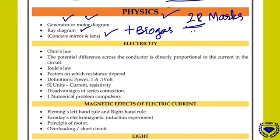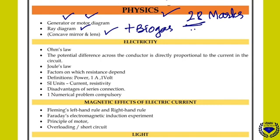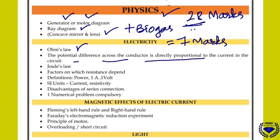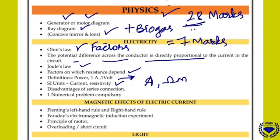Coming to electricity — around seven marks you can expect from electricity. Key concepts include: Ohm's law, the equation, and the figure. Potential difference — its definition and the fact that potential difference across conductors is directly proportional to current. Factors affecting resistance, Joule's law of heating, factors on which the resistance of a conductor depends, definition of power, one ampere, one volt. SI unit of current — ampere — and SI unit of resistivity — ohm meter. Disadvantages of series connection and advantages of parallel connection. One numerical problem is compulsory from electricity.